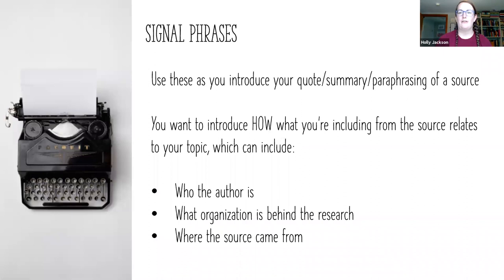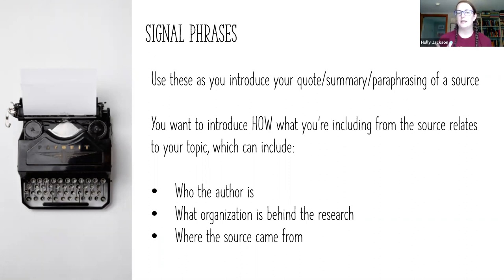Throughout all of this, you want to use signal phrases. These are what you use as you introduce your quote, summary, or paraphrase — the three main ways we include research in our papers. You want to introduce how what you're including from the source relates to your topic, tying it into the research question. This can include who the author or authors are, what organization is behind the research, or where the source came from.